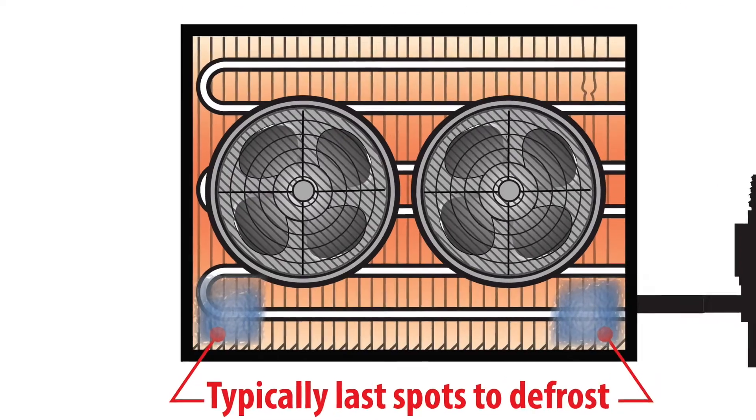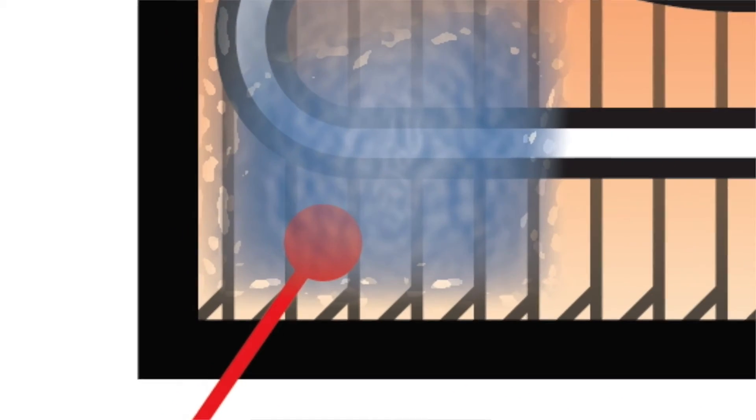Although it would be convenient for every installation to be exactly the same, refrigeration is a dynamic system and must be treated as such. Most of the time, it is about three or four fins away from the cabinet.